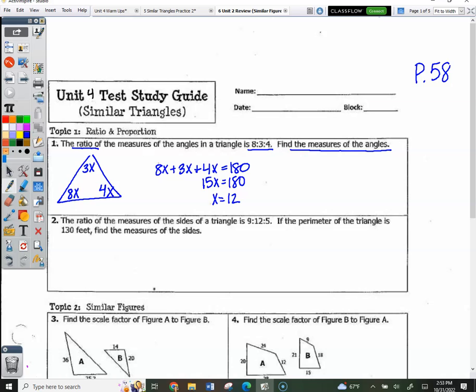Y'all put page 58 on this. 8 equals 96, 3 equals 36, and 4 equals 48. Yeah. Number 2. The very next one is the exact same concept. Are we talking about angles? No. Number 2, is it talking about angles? No, it's not. It's talking about sides. So, instead of inside the triangle, we're going to go where? On the outside of the triangle.